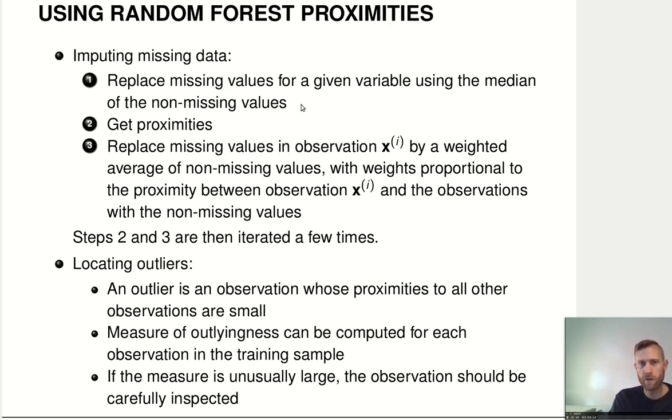So, we start out with a very rough guess for the missing values. We look, okay, which observations are kind of similar to what we are seeing here. And then we update our estimate of these missing feature values. And then we do it again. Eventually this will maybe even converge. But in any case, we can iterate steps two and three a couple of times to get better values.